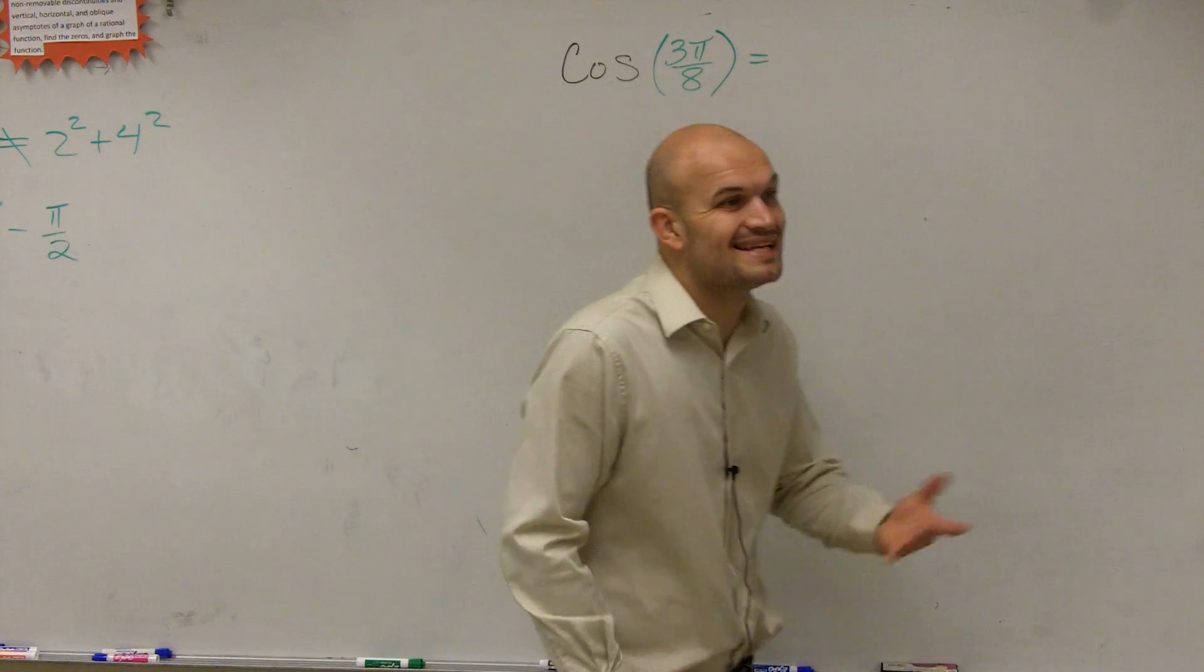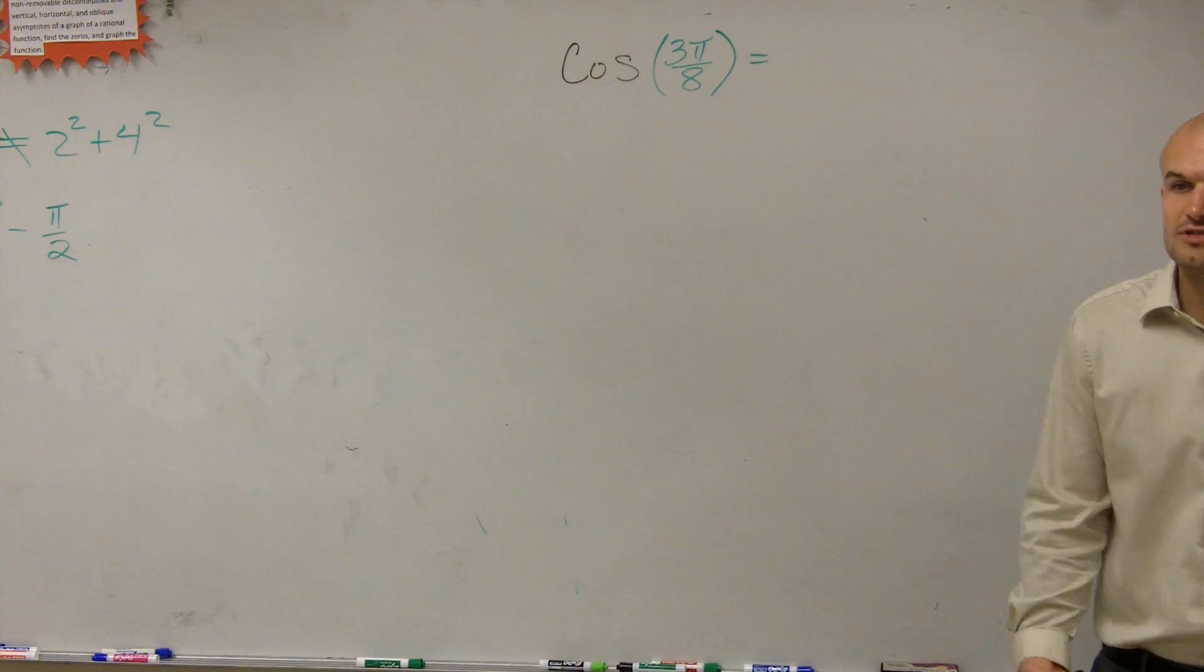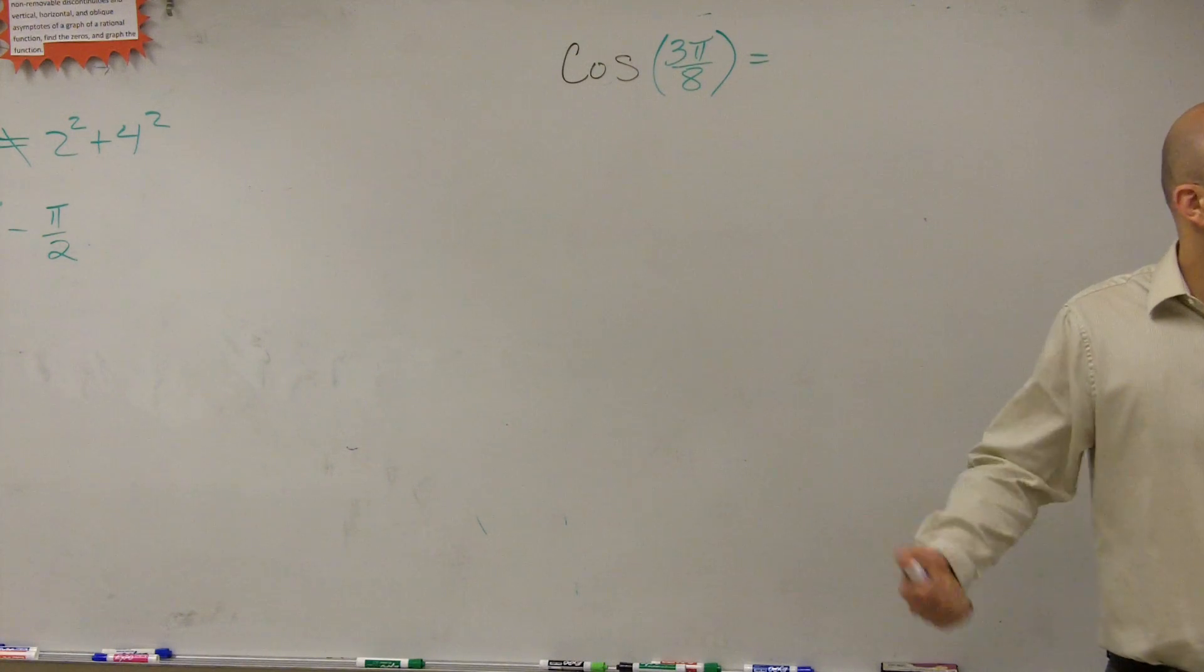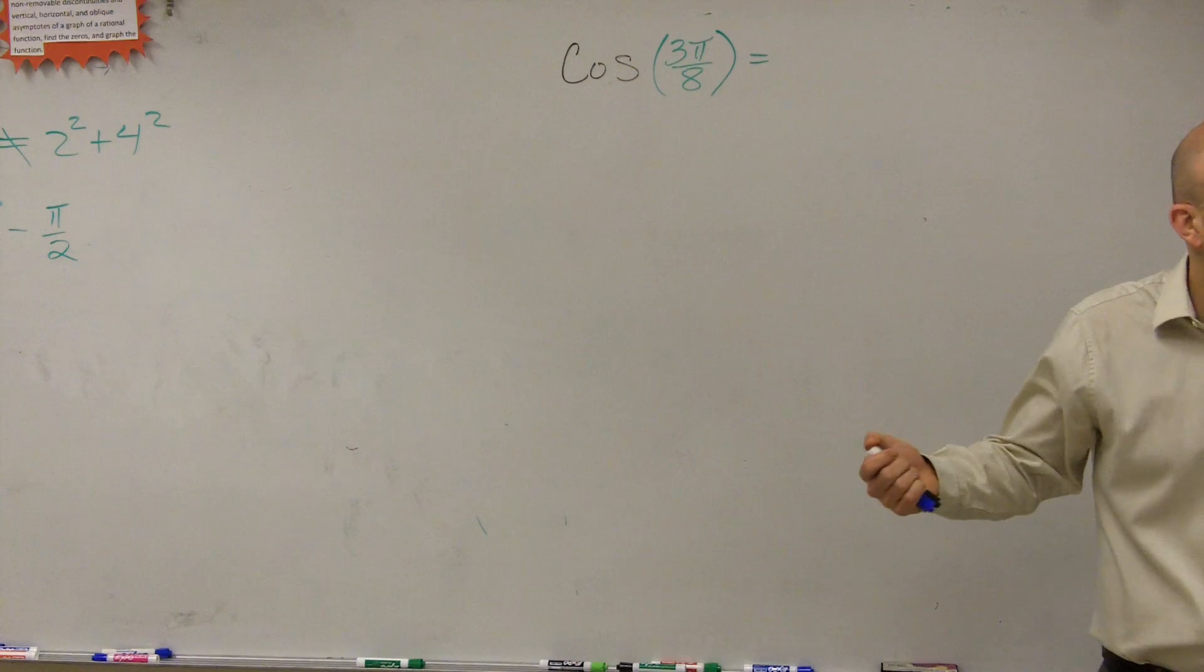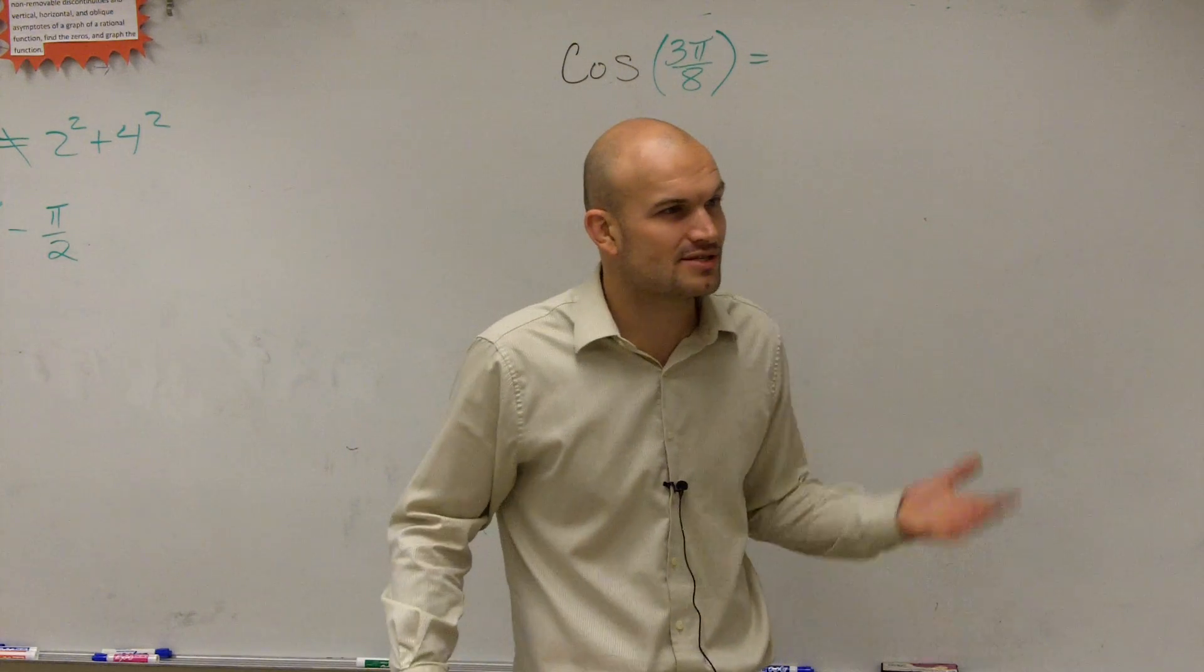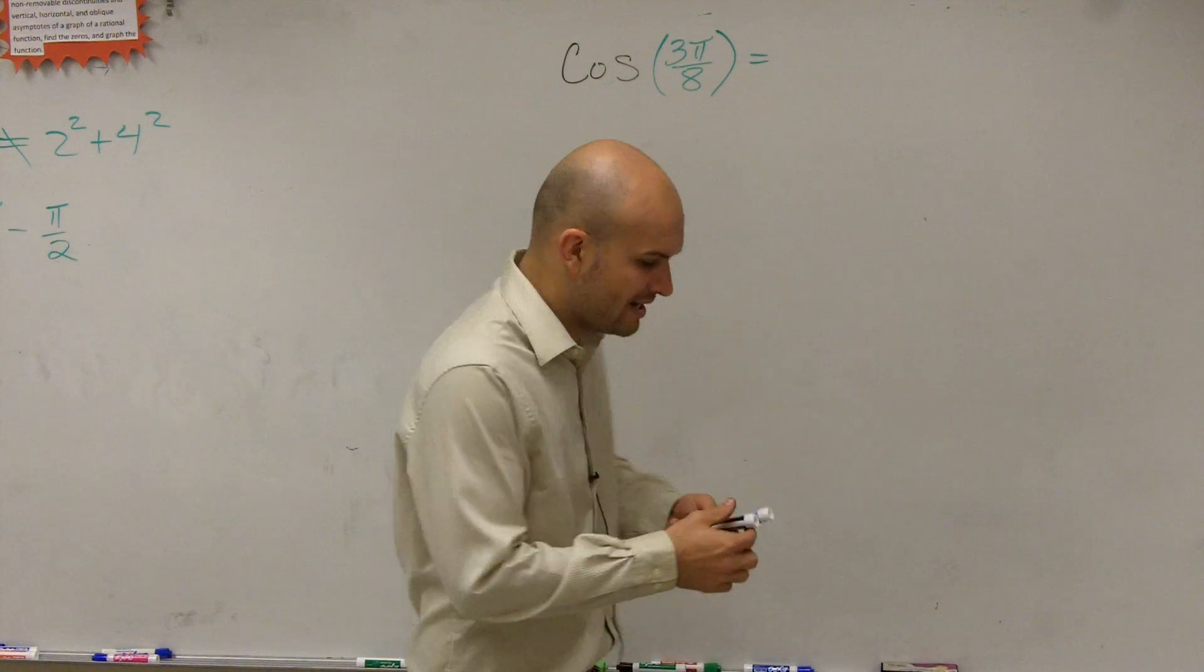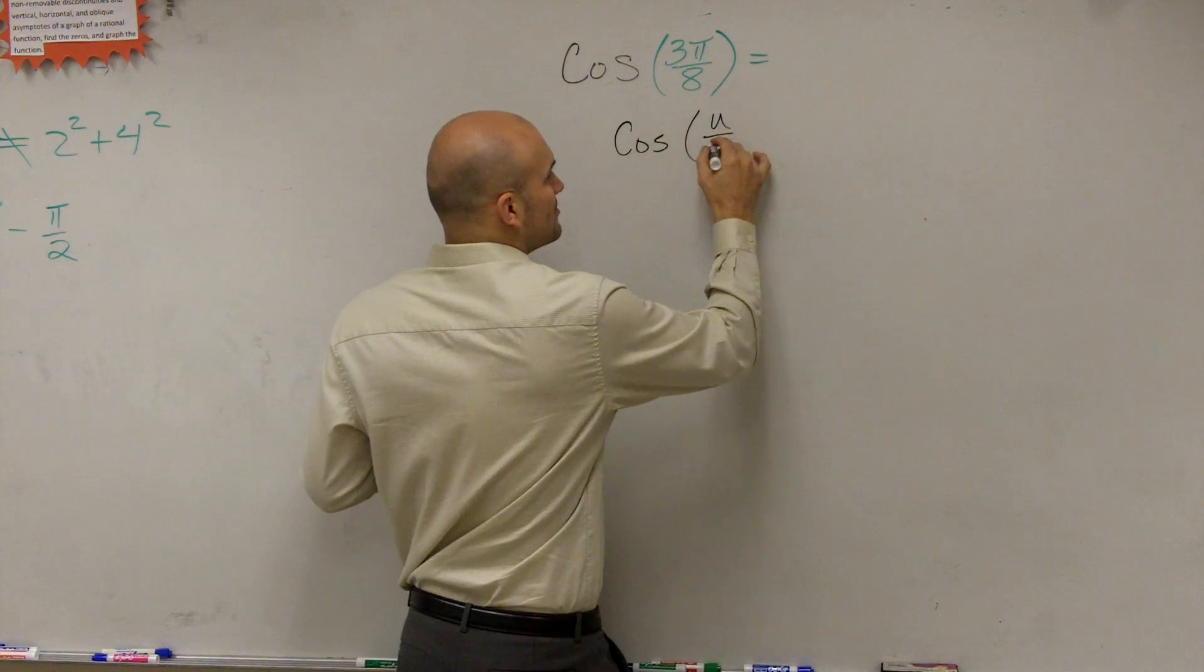So we have the cosine of 3π/8, the exact same thing. We can't evaluate this on the unit circle. We could try to see if we could use sum or difference formulas, but we don't really like using sum or difference formulas. And I don't really want to think of what two angles add up to give me 3π/8 or subtract to give me 3π/8. So why even bother doing it when I can use my half angle formula, which I'll have provided to me.